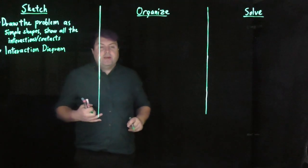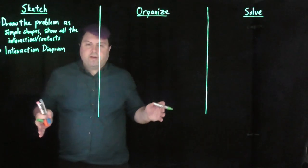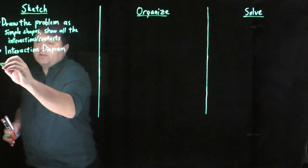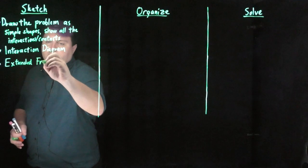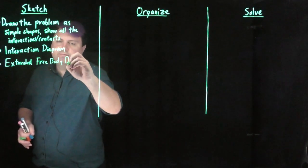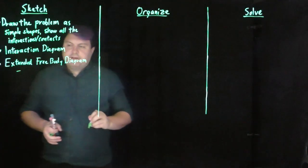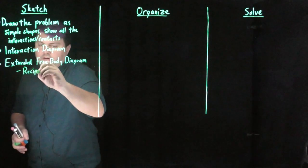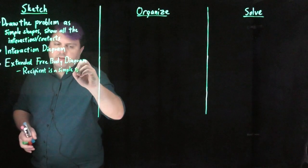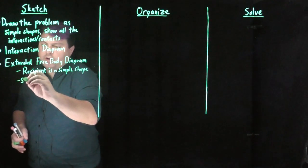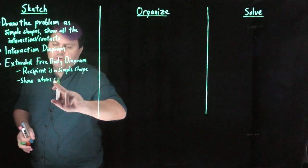But now the new thing is that a normal free body diagram is not going to be good enough because we want to see where things interact. So we need to start with an extended free body diagram. And so what this means is that our recipient is a simple shape, and then we show where each force is being applied.